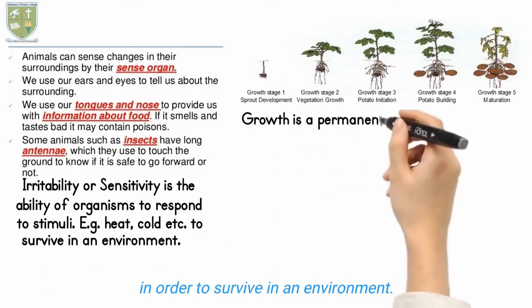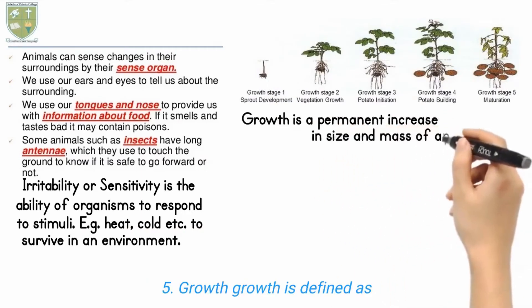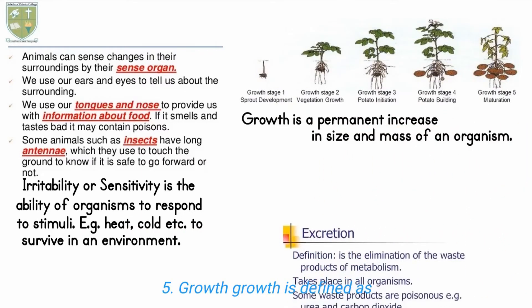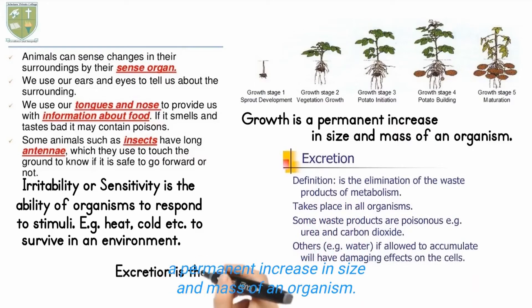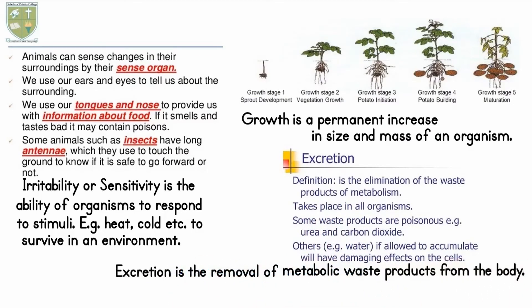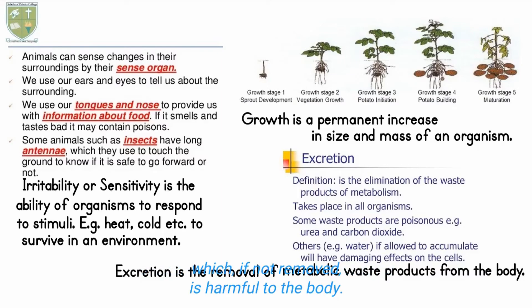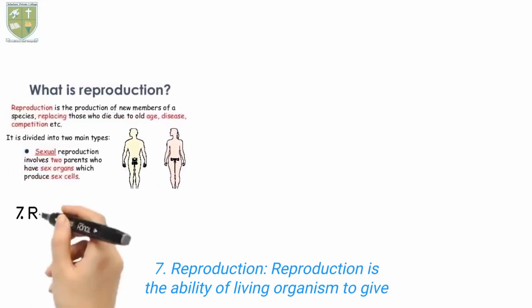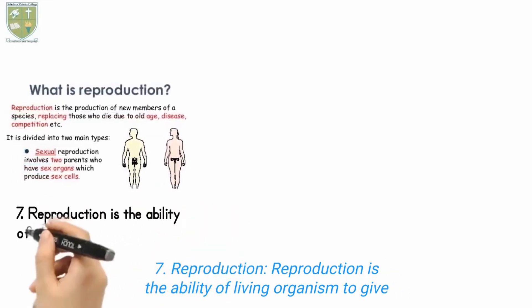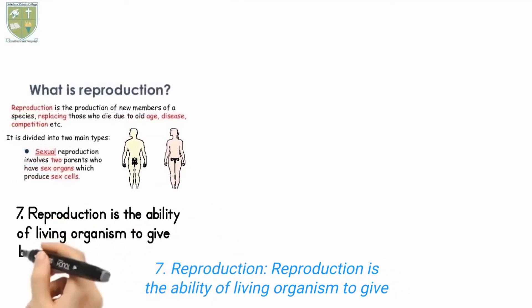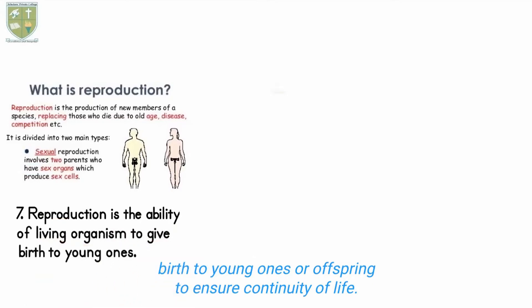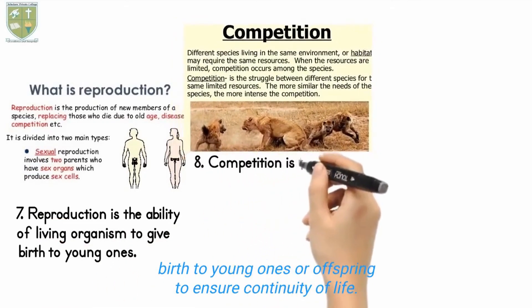5. Growth. Growth is defined as a permanent increase in size and mass of an organism. 6. Excretion. Excretion is the removal of metabolic waste products from the body, which, if not removed, is harmful to the body. 7. Reproduction. Reproduction is the ability of living organisms to give birth to young ones or offspring to ensure continuity of life.